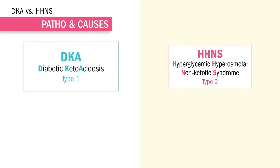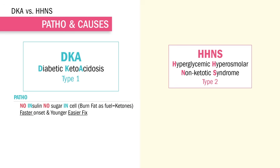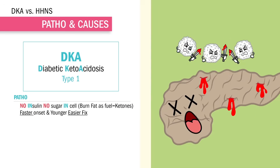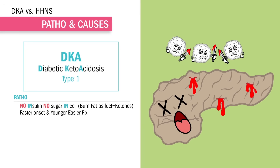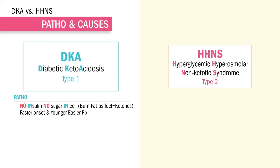What is DKA? Let the name help you — Diabetic Ketoacidosis. There is no insulin produced since it's type 1. The body has killed its own pancreas, and no insulin means no sugar in the cell. Therefore, the body must burn fat for fuel, resulting in fat waste, and ketone bodies are produced. Ketone bodies are very acidic wastes, so we have high acid in DKA.